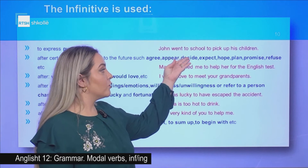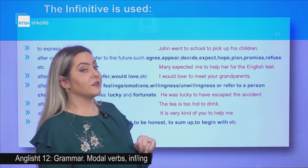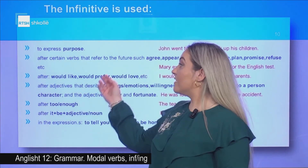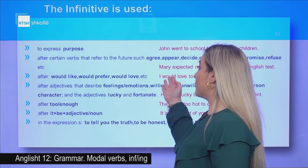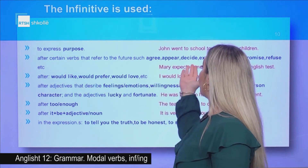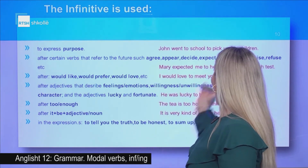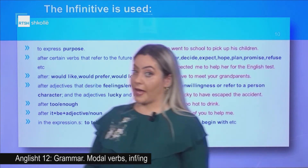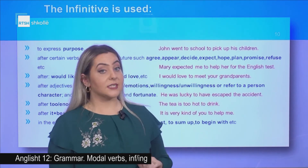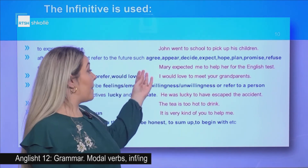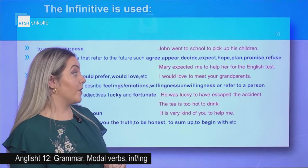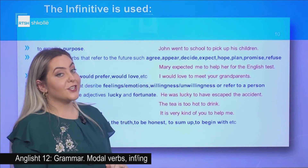Example: John went to school to pick up his children. The to-infinitive is also used after certain verbs that refer to the future, such as agree, appear, decide, expect, hope, plan, promise, refuse, etc. Example: Mary expected me to help her for the English test.